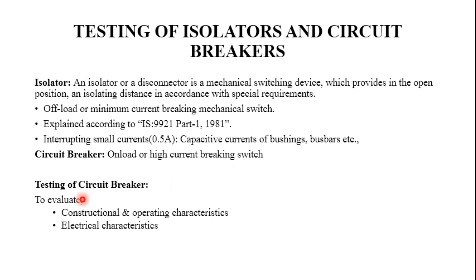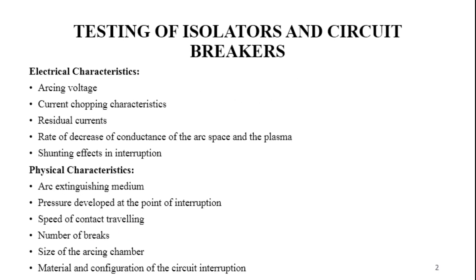For testing circuit breakers, there are two main categories: construction and operating characteristics, and electrical characteristics. The electrical characteristics to be determined include arcing voltage, current chopping characteristics, residual currents, rate of decrease of conductance of the arc space, and plasma shunting effects in the interruption process. A broad understanding of arcing voltage, residual current, and arc interruption is required.